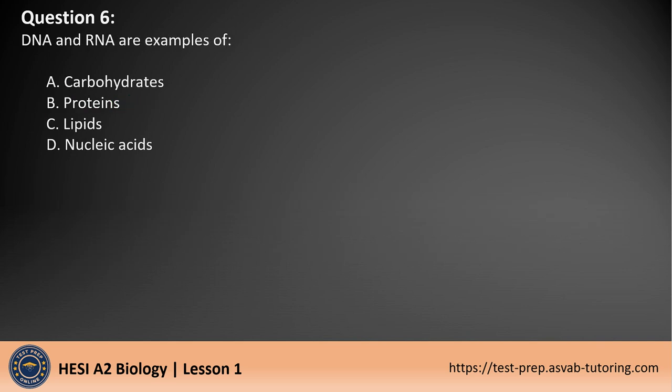Question 6. DNA and RNA are examples of: A. Carbohydrates. B. Proteins. C. Lipids. D. Nucleic acids.